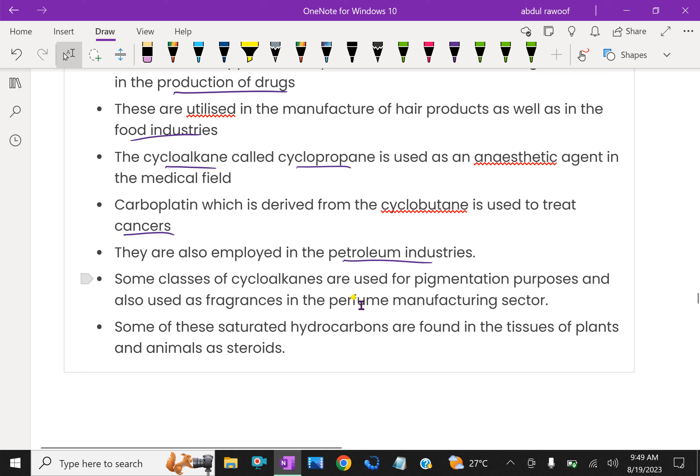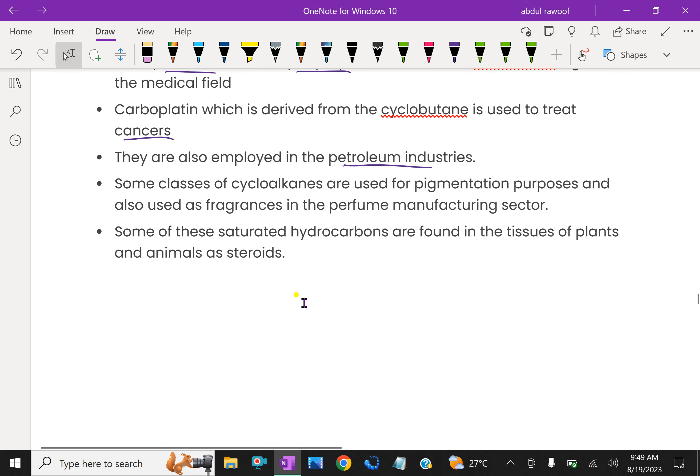Some classes of cycloalkanes are used for pigmentation purposes and also used for fragrances in the perfume manufacturing sector. Some of these saturated hydrocarbons are found in the tissues of plants and animal steroids.